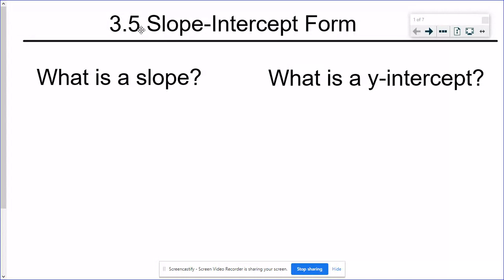So a slope, remember that's going to talk about how a line is moving. It can be a positive or a negative slope, horizontal or vertical, and it talks also about how steep it is if it's a really steep line or if it's more of a flatter kind of a line.